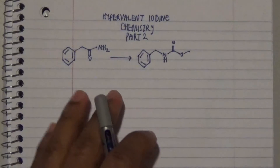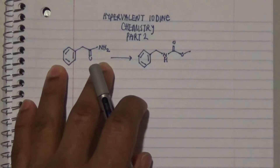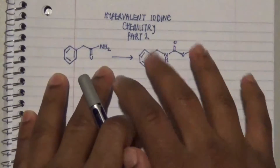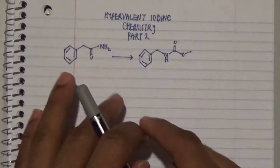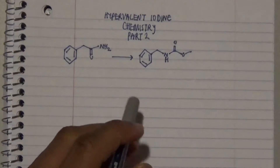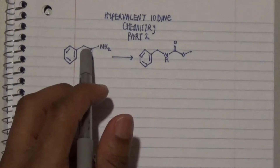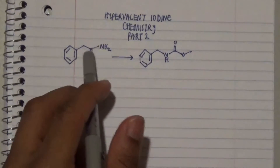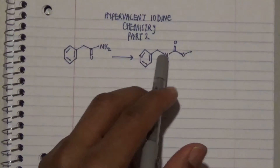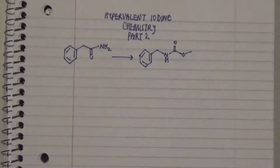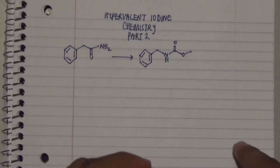We have this particular compound and we need to be able to transform it. Something quite interesting to note is that there's a change in the connection of the bonds — switching from one point to another, with the loss of this particular group. So let's look at the various reagents we can include in this reaction to make this process happen.